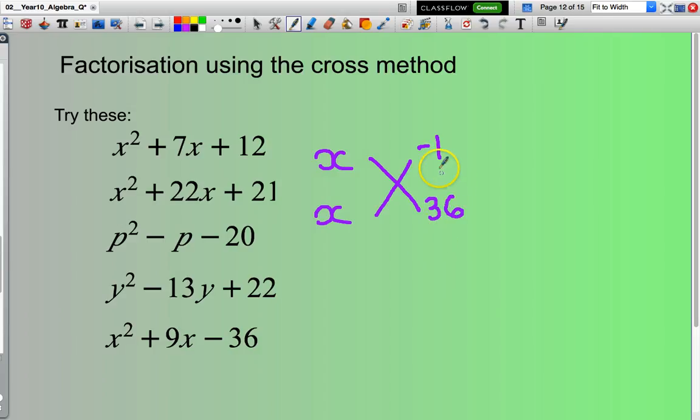So let's have a look. We'll start with negative 1, positive 36. So I like to work with positive, so 36 times x is 36x minus 1x. 36 minus 1x is 35x. That does not give me 9x. So next factor, I'll just work my way up here: negative 2 and 18. So 18 times x is 18x minus 2x. That gives me 16x. I'm getting closer but not close enough yet.